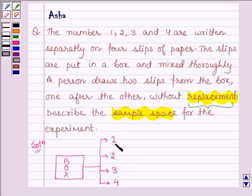So if they draw the first slip with number 1, then the other slip which they draw from the box will have numbers 2, 3, or 4.